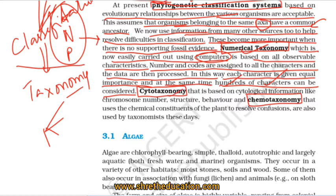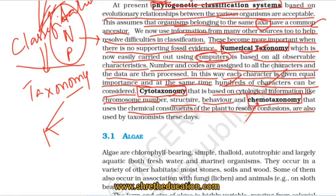Cytotaxonomy is based on cytological information such as chromosome number, chromosome structure, and chromosome behavior. Chemotaxonomy uses chemical constituents of plants to resolve confusions and is also used by taxonomists today.